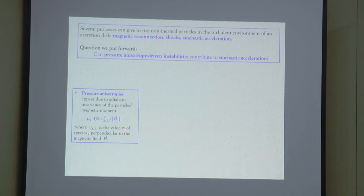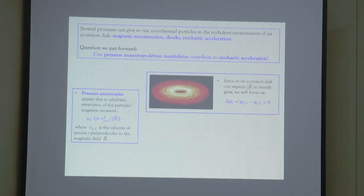If we think about a scenario with a turbulent accretion disk, the magnetic field should change in time. If the magnetic field grows, it will produce an increase in the perpendicular velocity of the particles with respect to the magnetic field, creating a scenario where the pressure perpendicular to the magnetic field is larger than the pressure parallel.